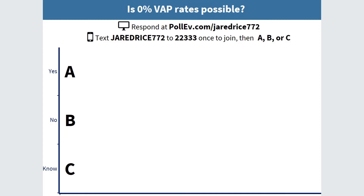A VAP rate of zero sounds great but is not possible. Some centers report zero cases, but it depends on the time period. VAP rates were only near zero when compliance to the bundles was over 95%. It also depends on the center's volume and health status of their patients — one center may see only a couple of intubated patients a month while another sees a dozen a day. No matter what you do, somebody is going to end up developing it, so you just have to do what you can to prevent it.